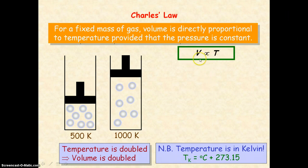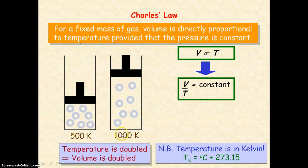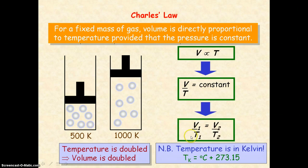Going back to the expression for Charles' law: if we take the volume and divide it by the temperature, that will be a constant value, provided the pressure is constant and we have the same mass of gas. So if the temperature changes from T1 to T2, the volume will also change from V1 to V2. Because V divided by T equals a constant, then V1 divided by T1 will equal V2 divided by T2.